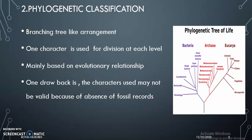Phylogenetic classification is based on evolutionary relationships, and one character is used for division at each level. The resulting classification has a phylogenetic tree-like, branching appearance. One drawback is that the characters used for classification may not be valid because of the absence of fossil records — that is, there is no evidence.